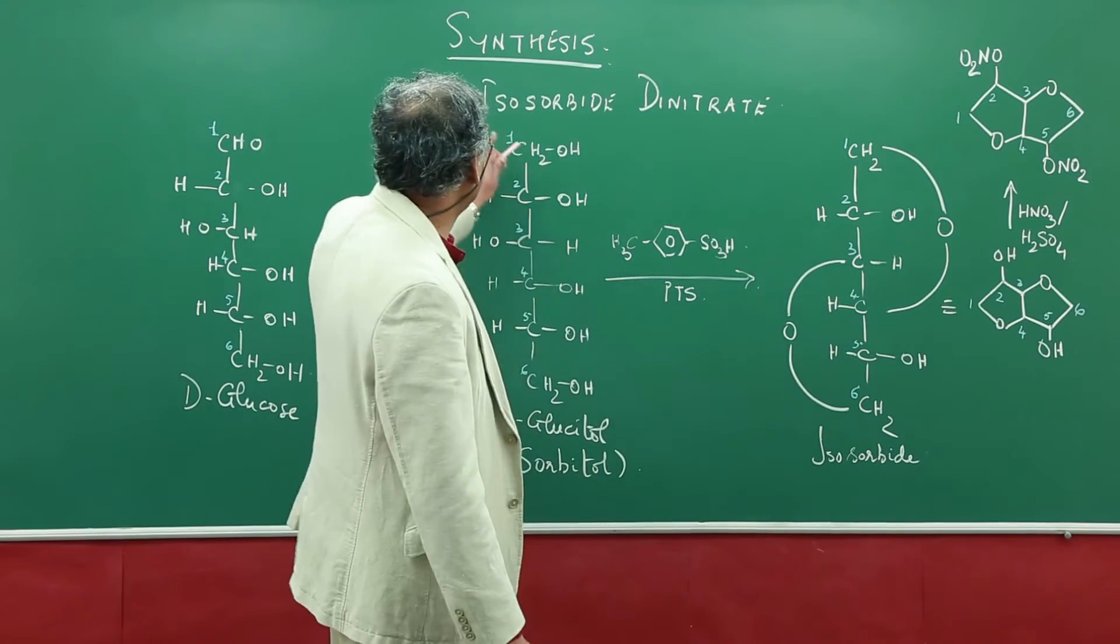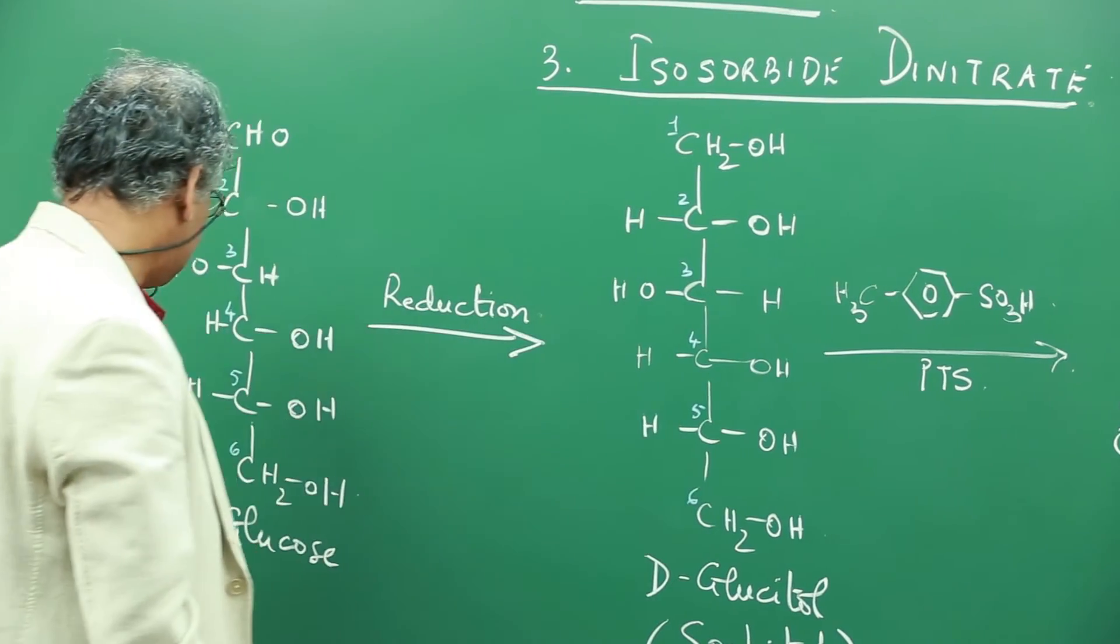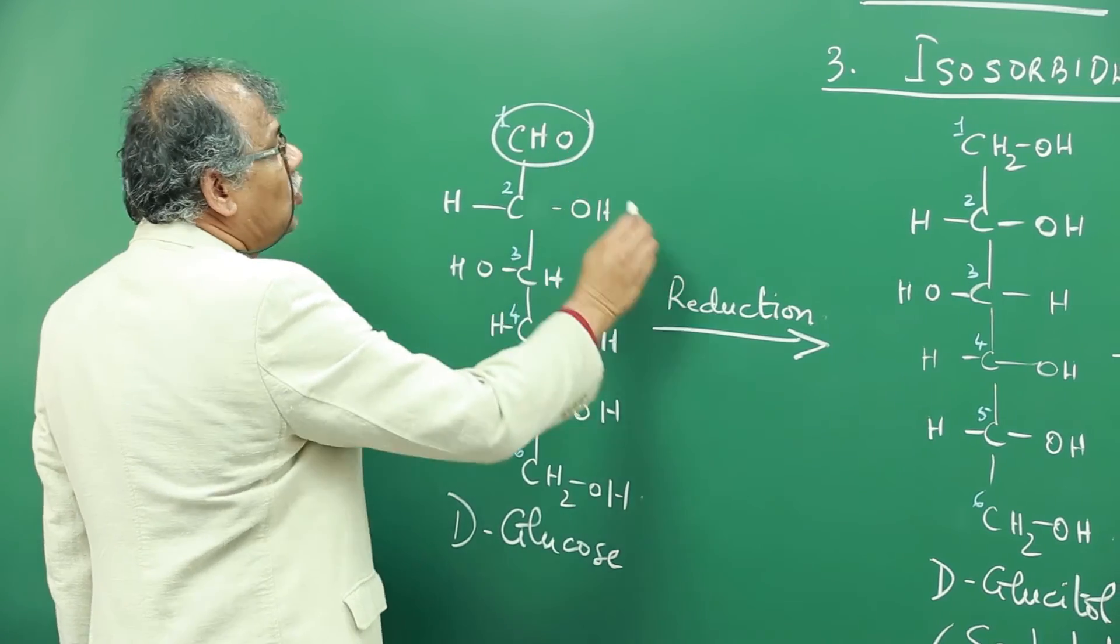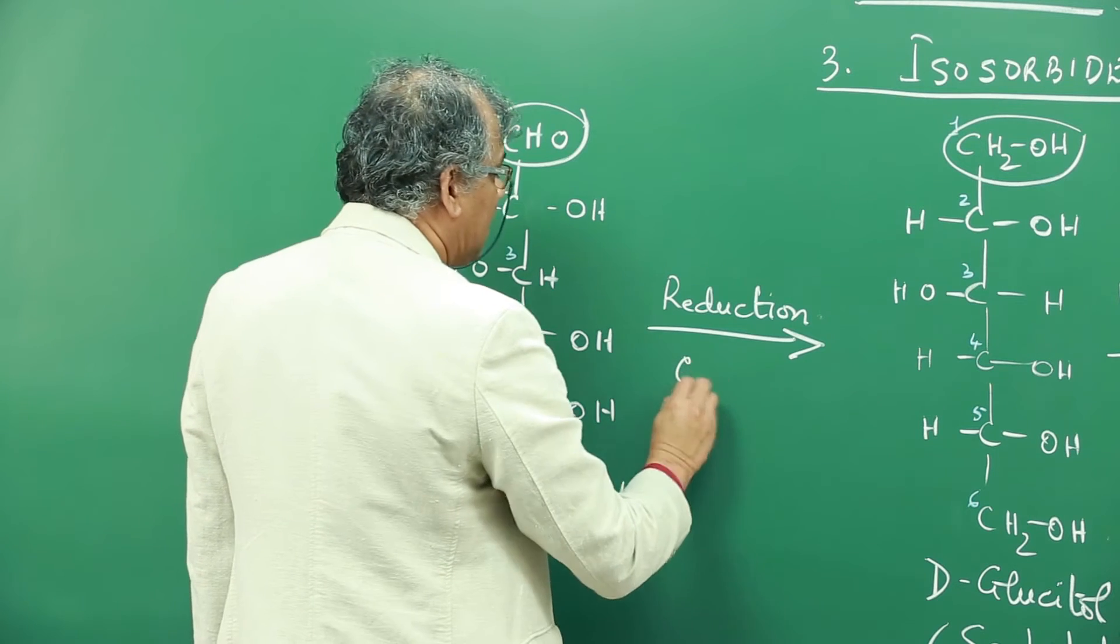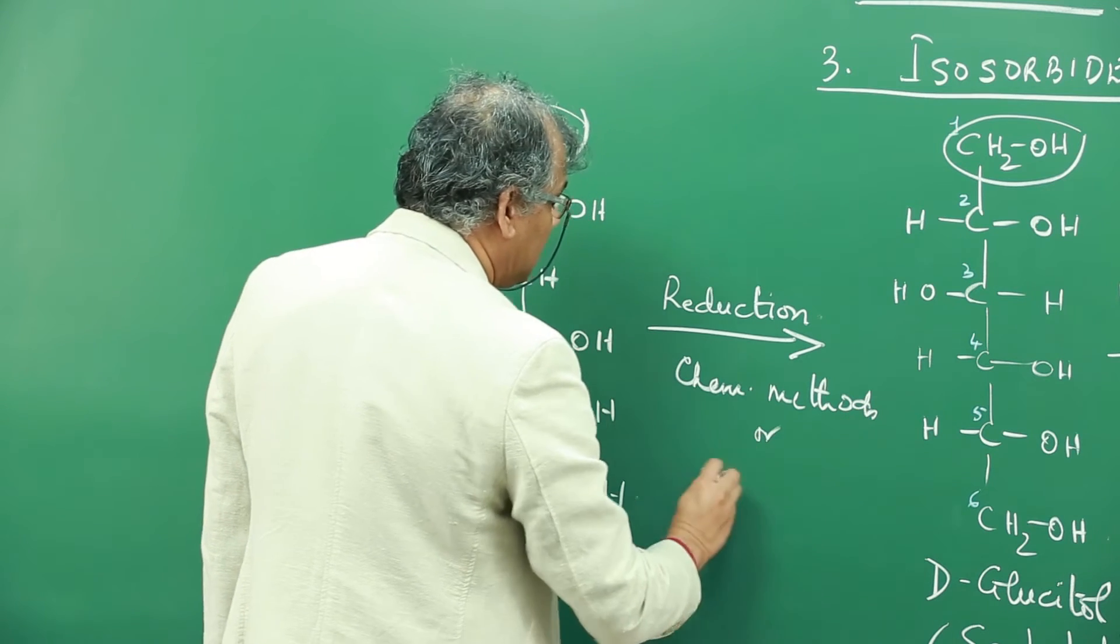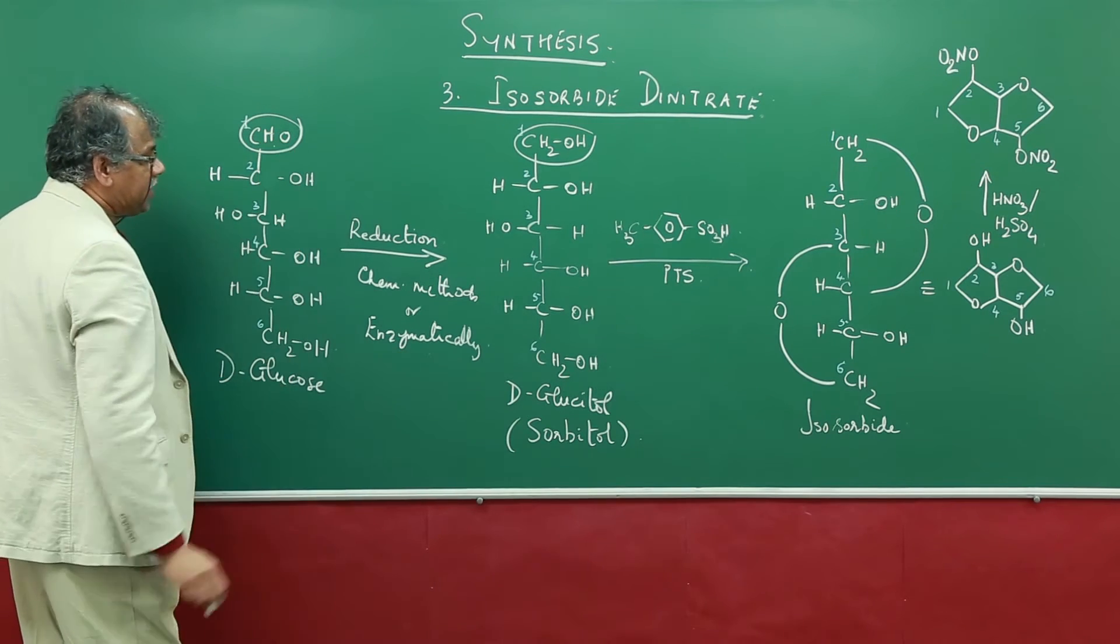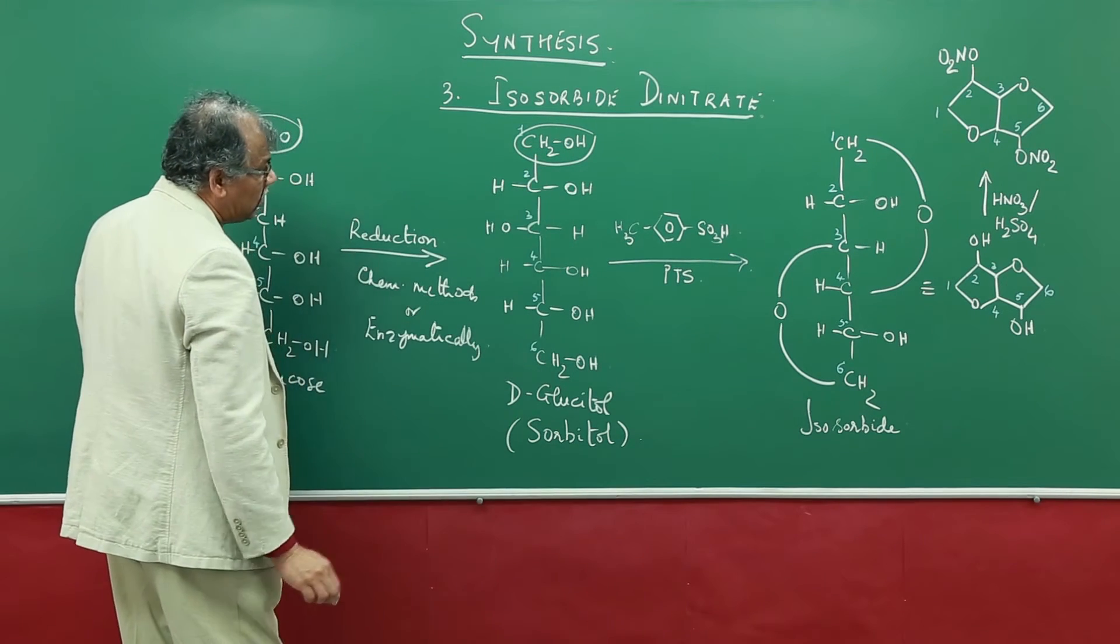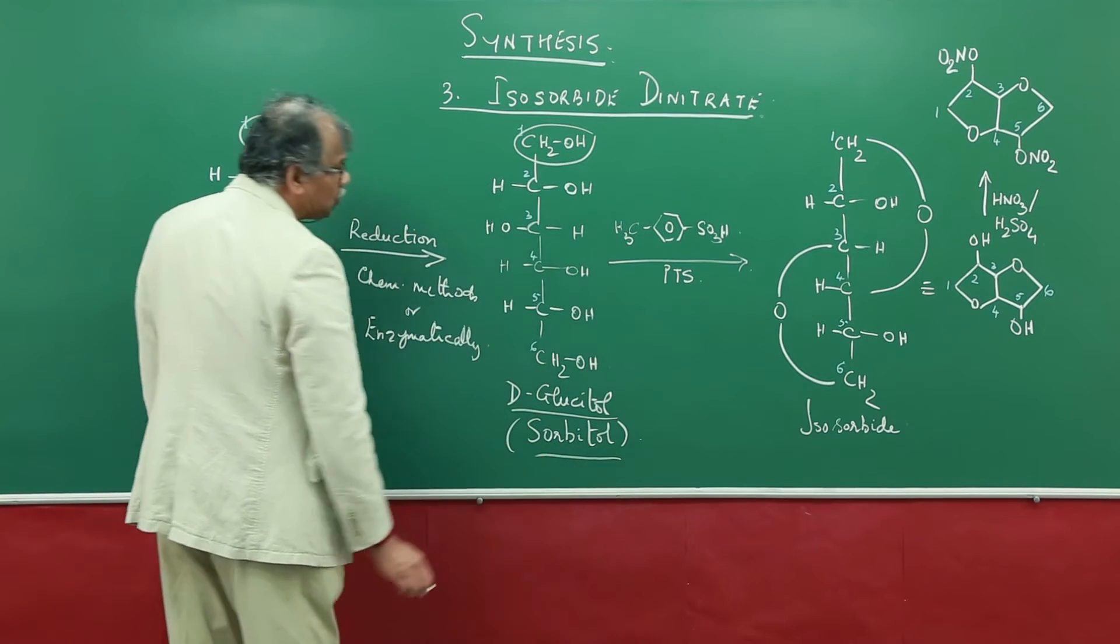A third molecule is isosorbide dinitrate. The synthesis starts with D-glucose. The aldehyde group is reduced to the alcohol. One can do this reduction by chemical methods or enzymatically, like an enzyme like aldehyde reductase that will convert the aldehyde group into the alcohol. This is D-glucitol, also known as sorbitol.